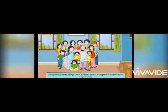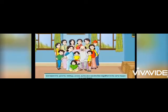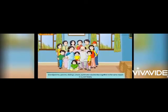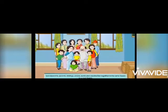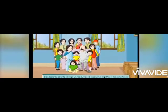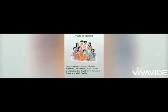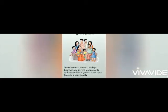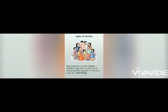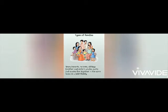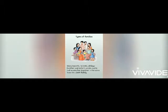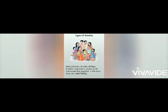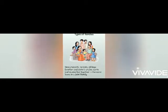The next one is joint family. The word 'joint' says जुड़ा हुआ — हमें word जो joint है उससे ही समझ में आ रहा है कि जुड़ा हुआ। So, joint family means grandparents, parents, siblings, uncles, aunts, and cousins live together in the same house.